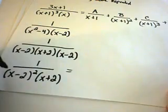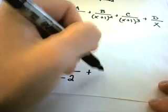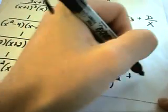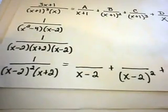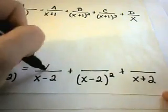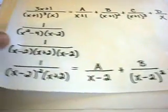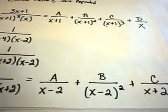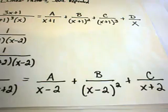Since we have (x−2) squared, we build up to it: a fraction with x−2 to the first power, then x−2 to the second power. Then we handle x+2. Since each is a linear factor, we put constants on top: A over (x−2), B over (x−2)², and C over (x+2). That is the partial fraction decomposition. Figuring out the values of A, B, and C will be covered in the next video.